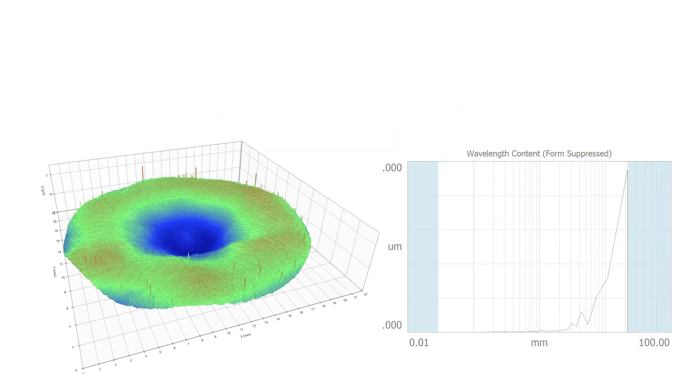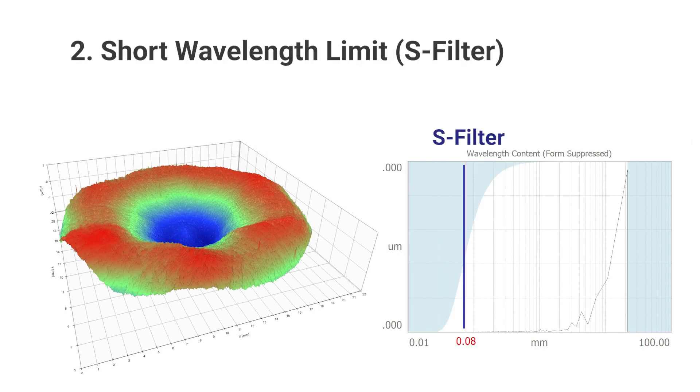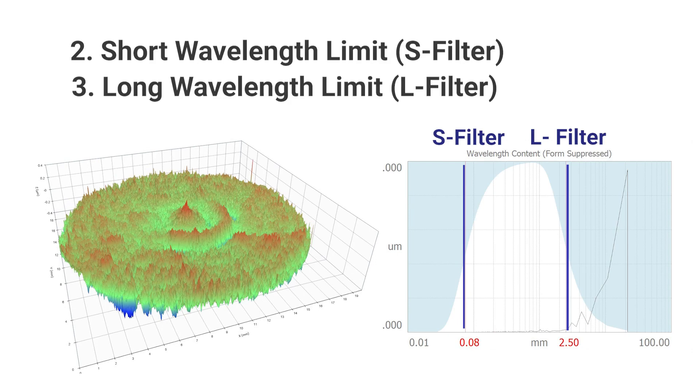As with 2D measurements, we start by removing the reference geometry. Then, we apply a short wavelength limit, or S filter, and a long wavelength limit, or L filter. The texture we'll analyze will be composed of the spatial wavelengths between the filters. We call this the SL surface, and we can have as many as we need for the application.